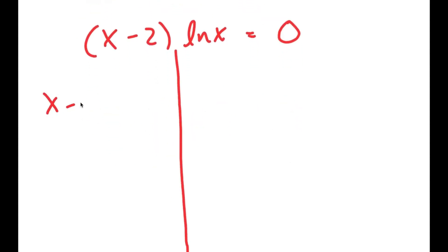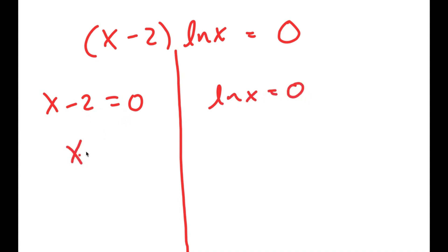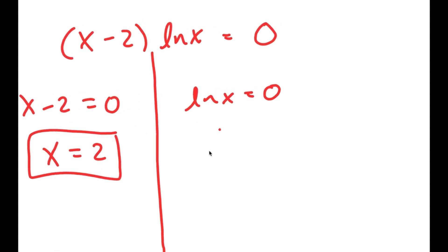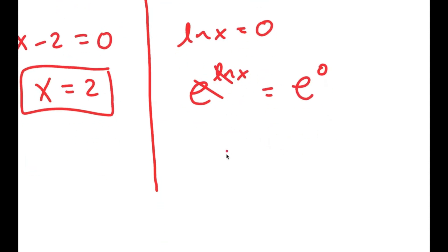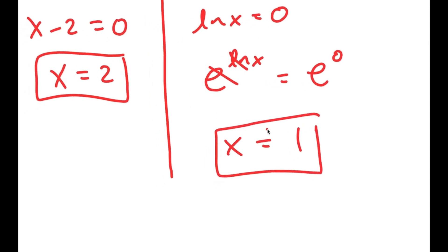So now I get two equations: x minus 2 equals 0, and ln of x is equal to 0. From x minus 2 equals 0, x simply equals 2. For ln of x equals 0, I take e to the power of both sides — these cancel on the left, leaving x is equal to e to the power of 0, which is 1. So these are my two solutions: x equals 2 and x equals 1.